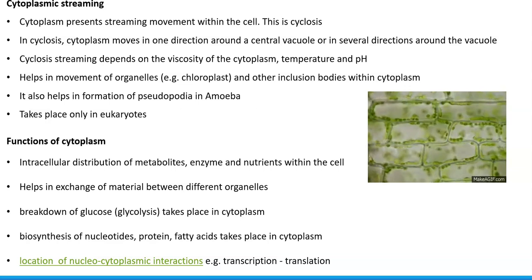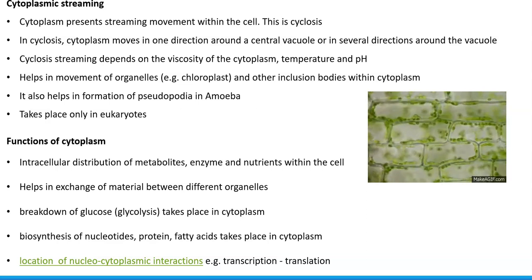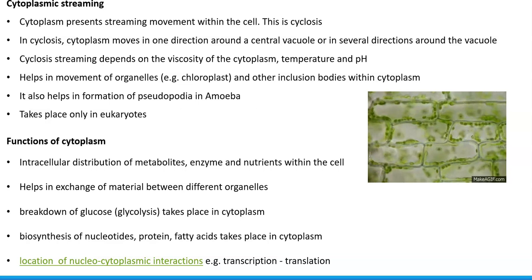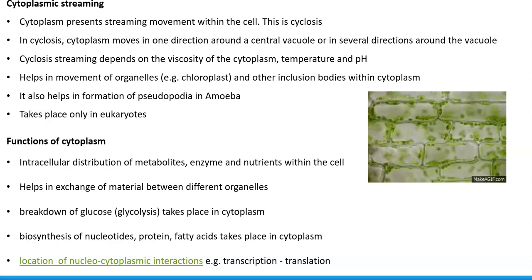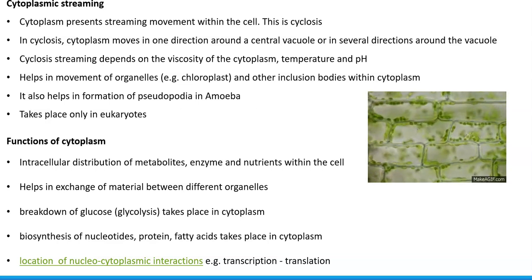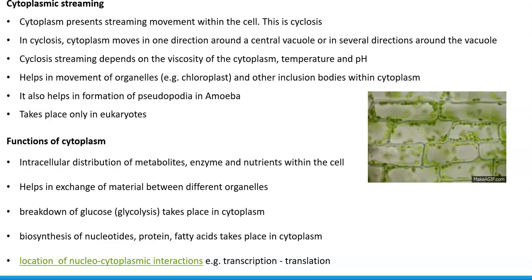It is also the site for biosynthesis of nucleotides, proteins, and fatty acids, and is the location where most nucleocytoplasmic interactions occur. Examples of nucleocytoplasmic interactions include transcription and translation. The translation process takes place in the cytoplasm with the help of ribosomes — the nascently formed mRNA molecule comes out of the nucleus through nuclear pores and attaches to a ribosome, where translation is carried out.